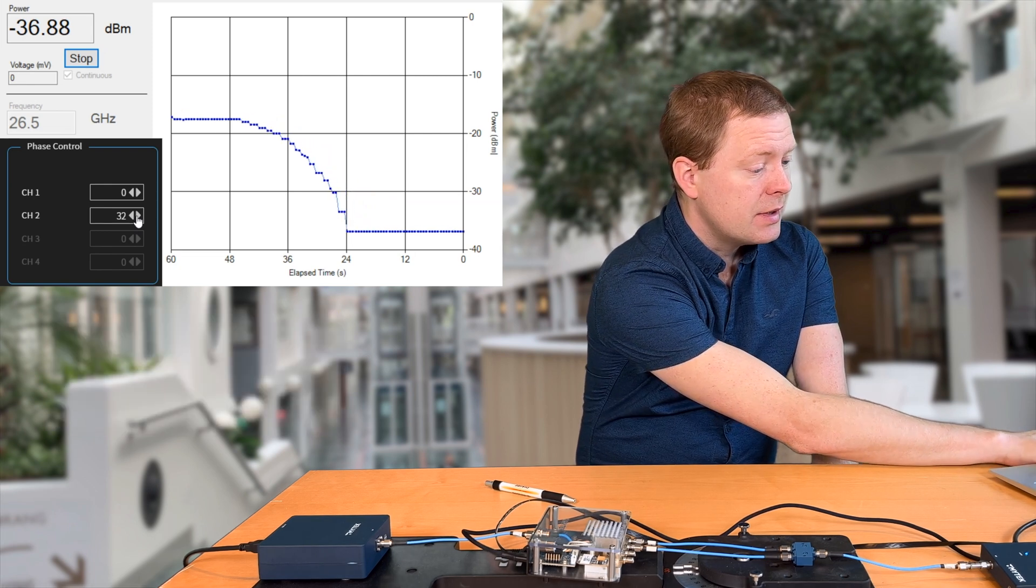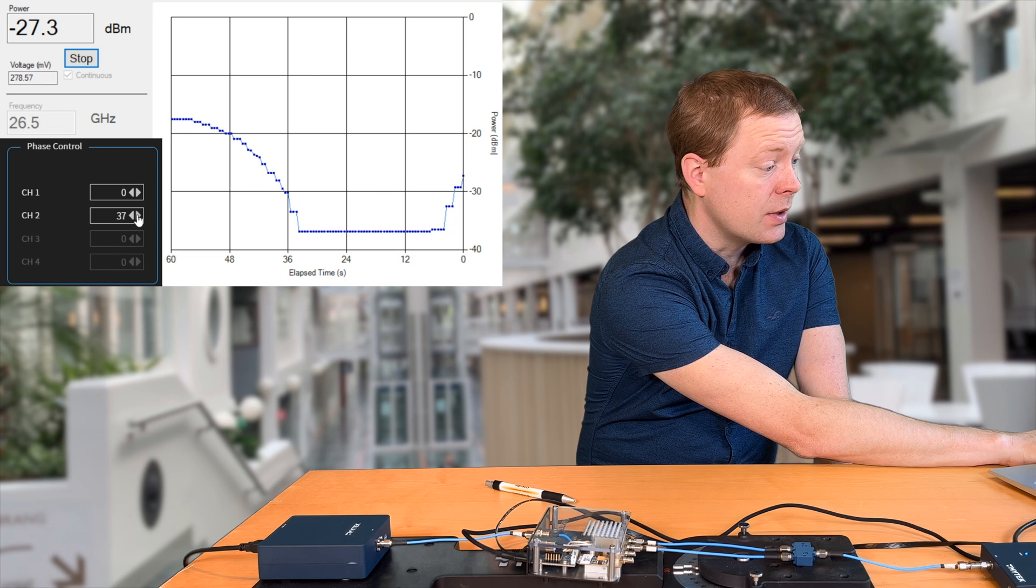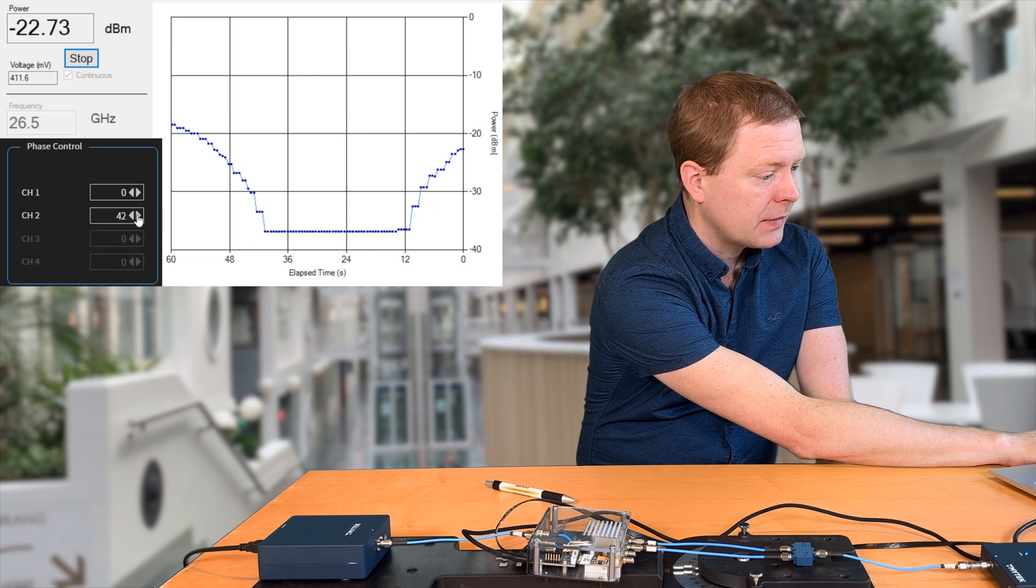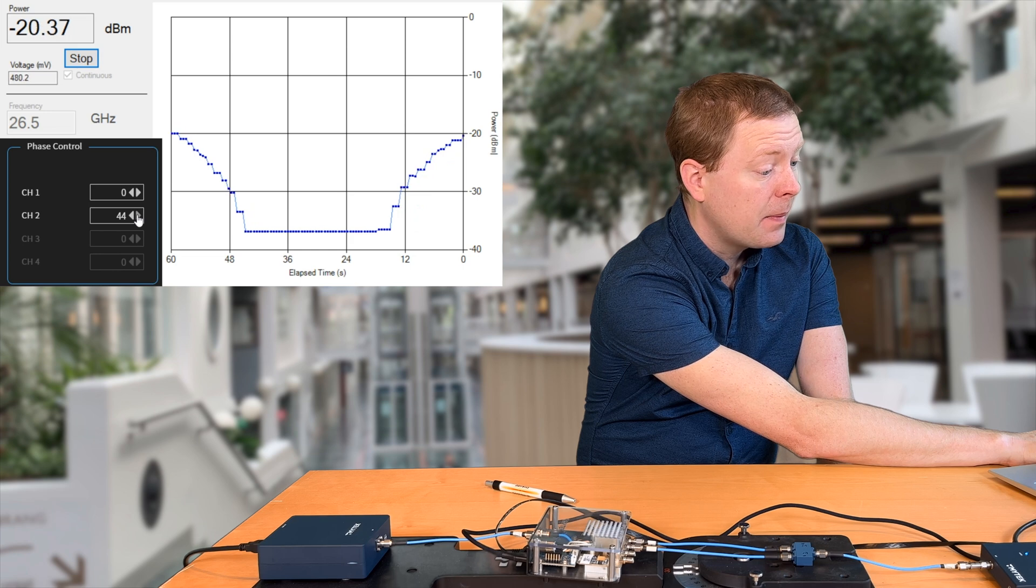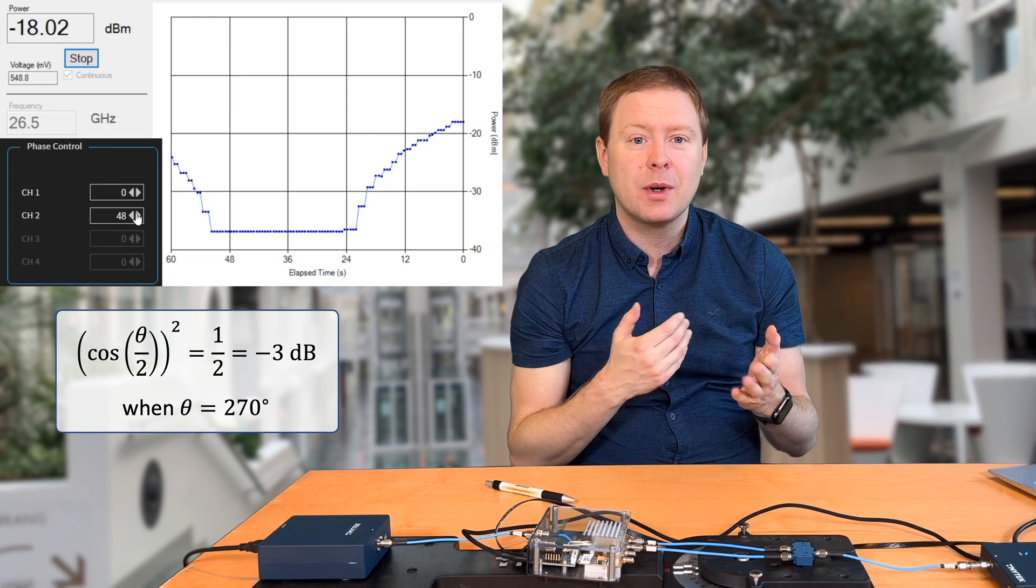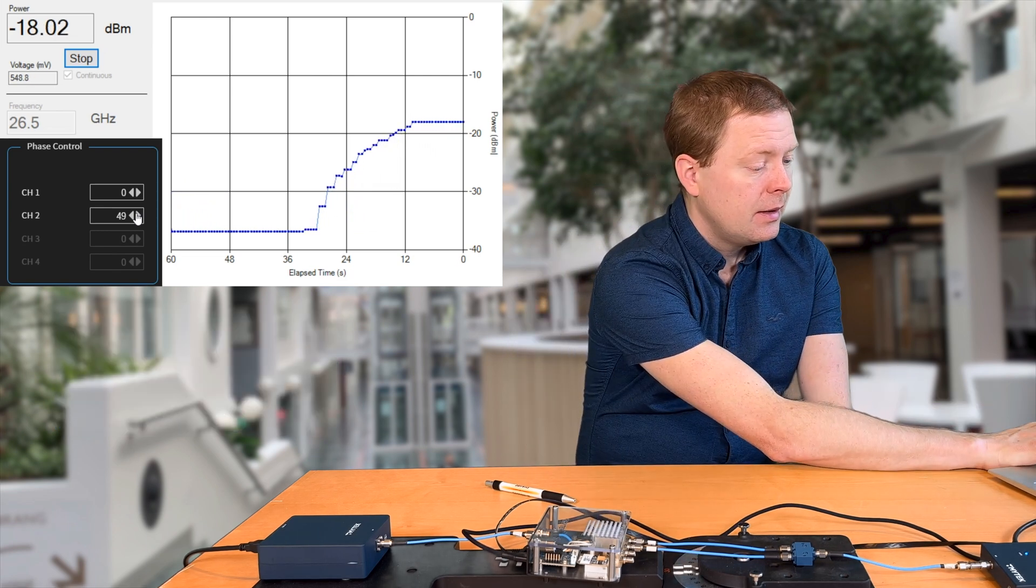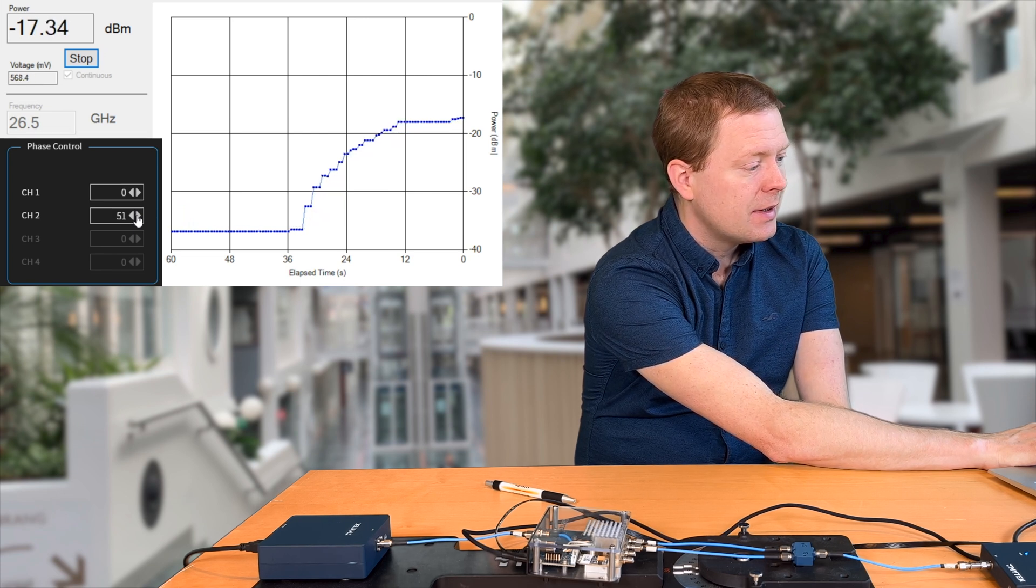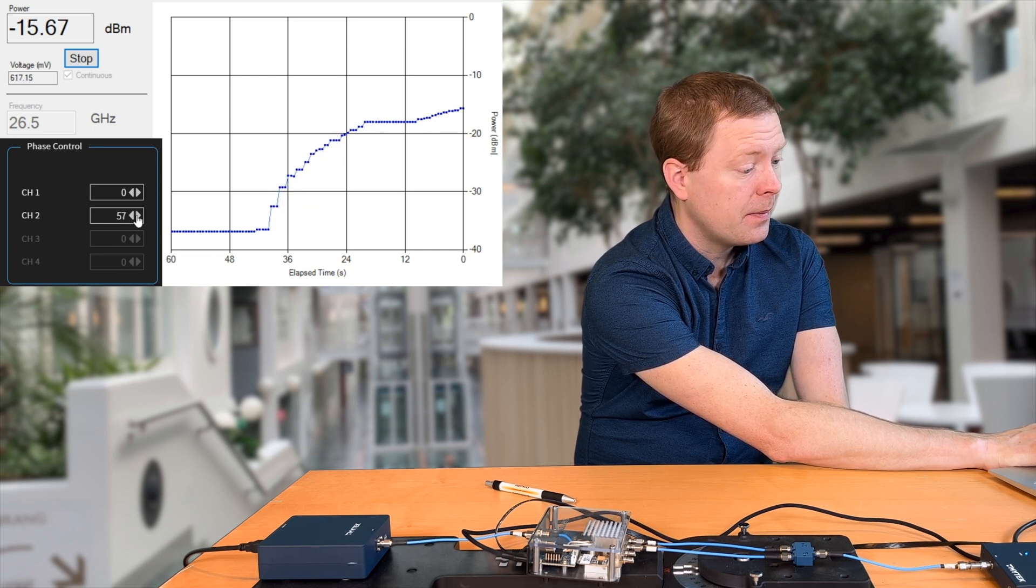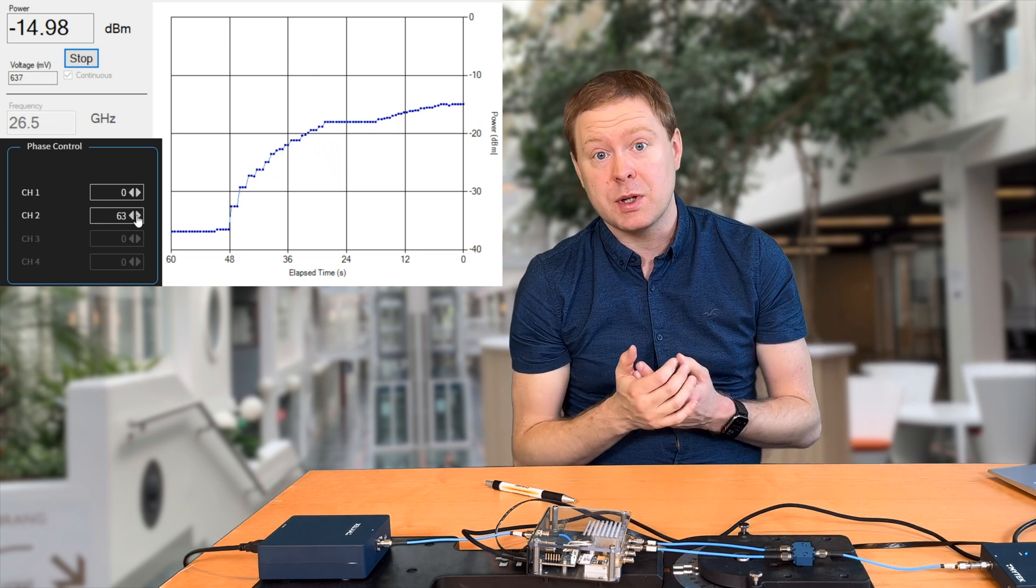If we start to continue phase shifting the signal, we see now how the received signal power starts to increase again. And just as before, it goes up quickly in the beginning. And when we are up at 48, now once again the two signals are only 90 degrees shifted from each other, and then the losses will not be as large anymore. But as I'm continuing to phase shift the signal so that we get more and more aligned, we can see how the signal power continues to go up. And when we reach 63, we are up at roughly what we started with.